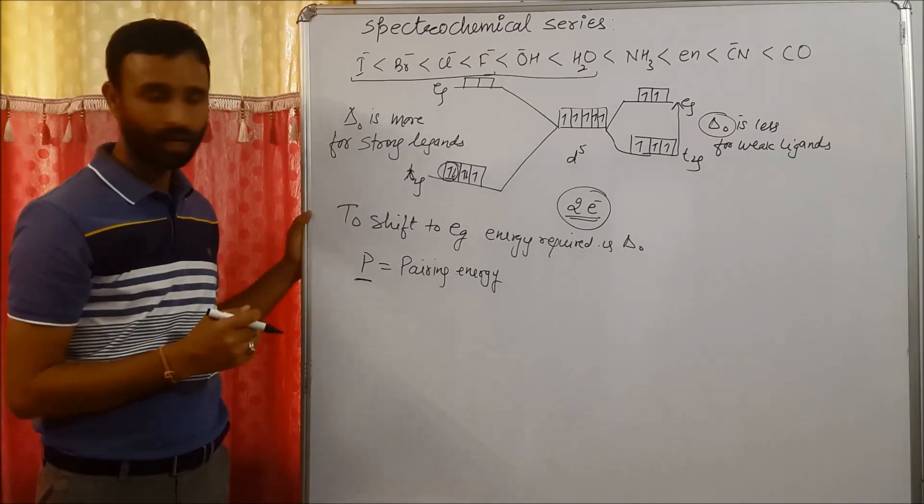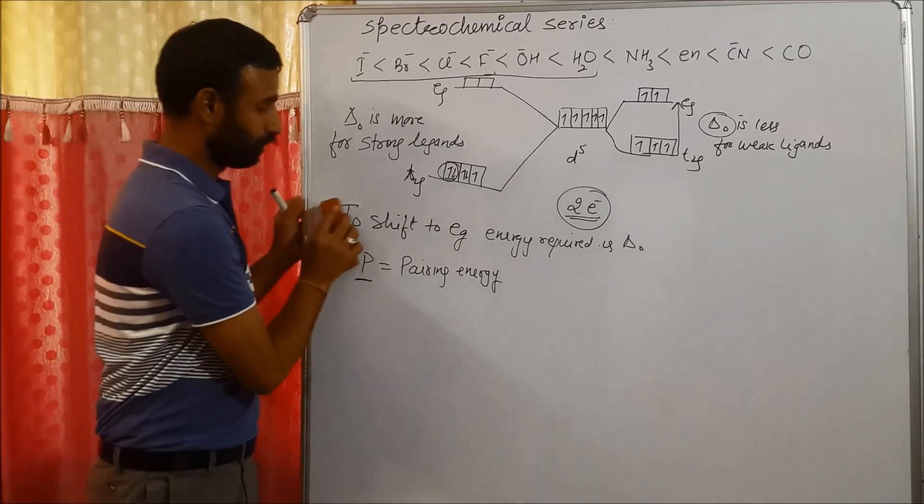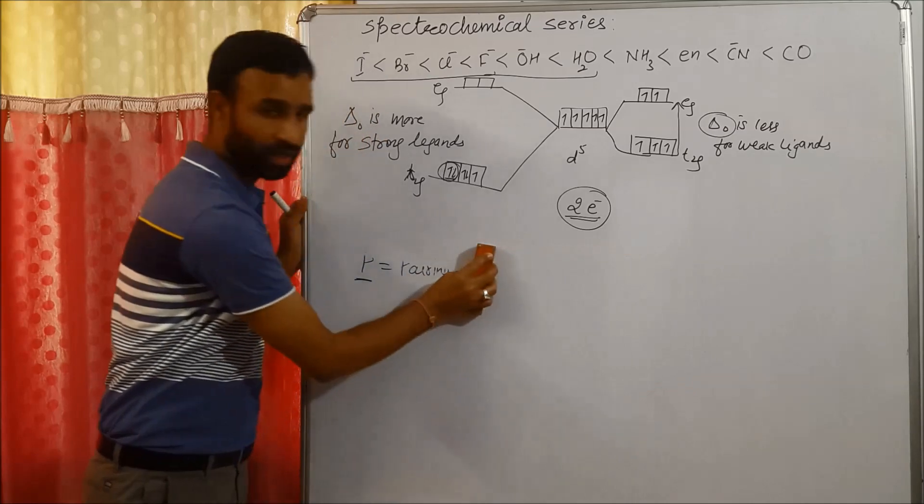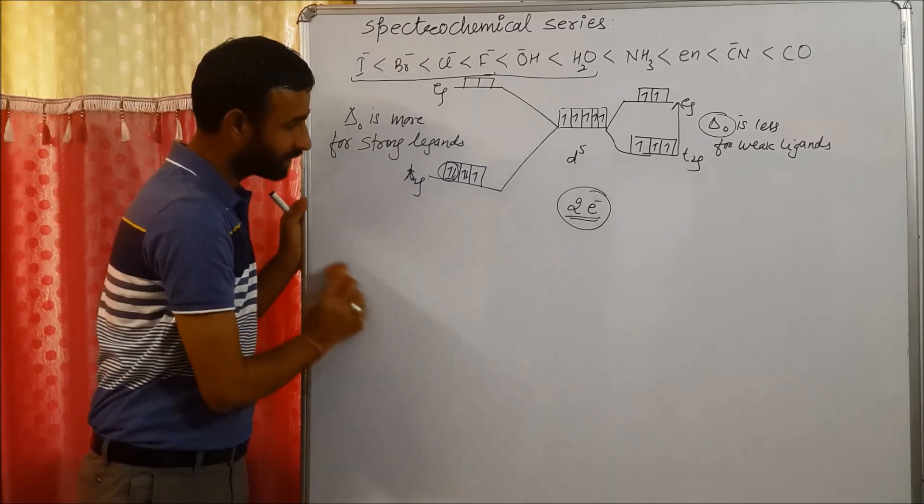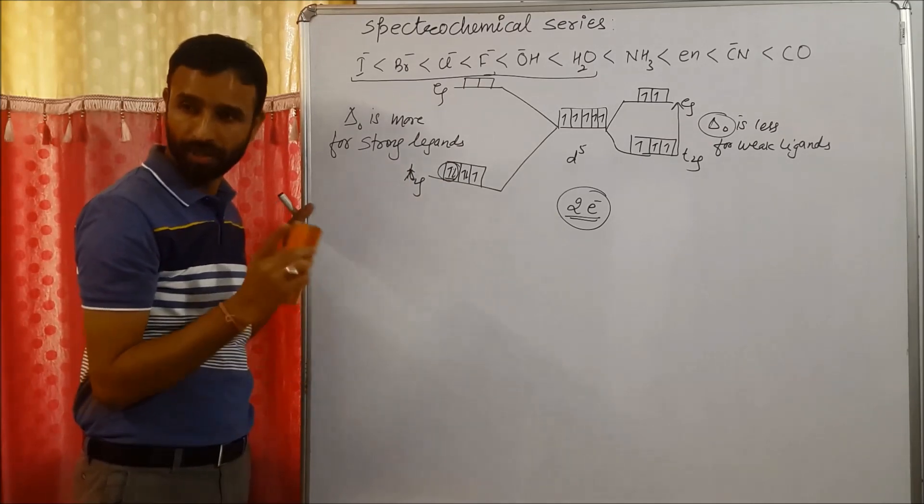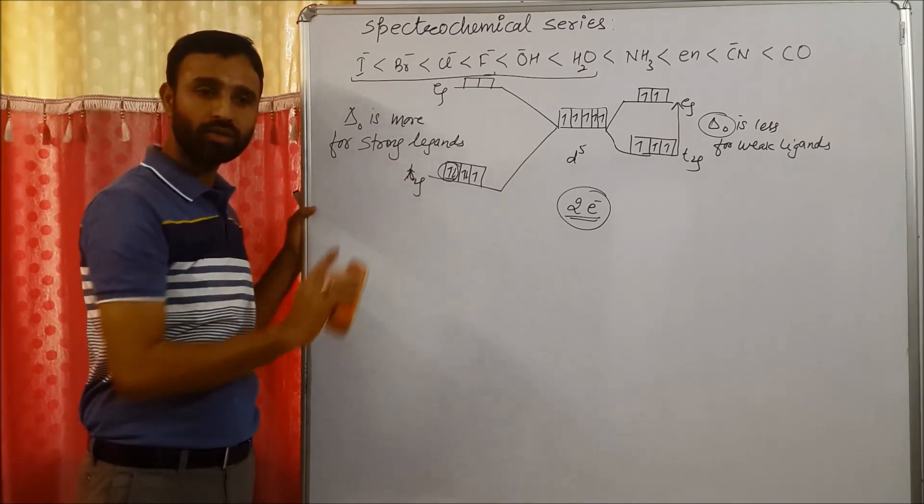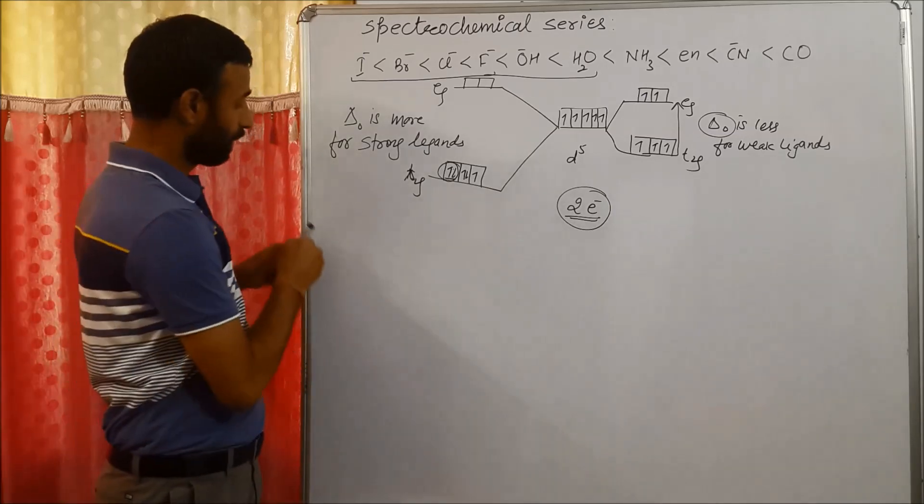There are two energies. One is delta O, that is the energy required to shift the electron. And second is P, that is the energy required to get the electron paired. Now, case one.